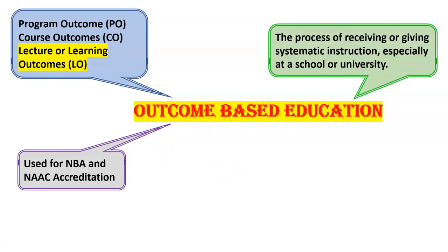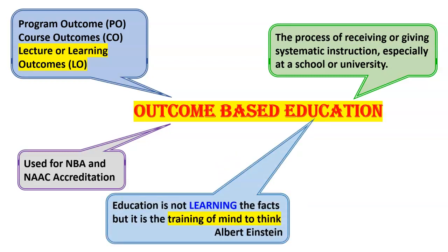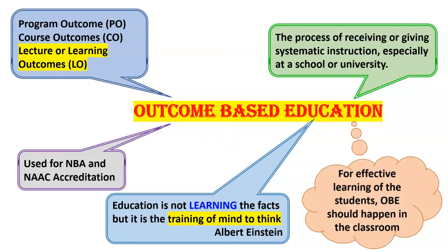What is education? What is the meaning of education? From the dictionary: education is the process of receiving or giving systematic instruction, especially at a school or university — just receiving and giving information. Albert Einstein told us that education is not learning the facts, but it is the training of the mind to think. Really, the training of the mind should happen inside the classroom — that is what real education and real learning is. So, how are we training the mind to think? For effective learning of the student, OBE should happen in the classroom, through every lecture.